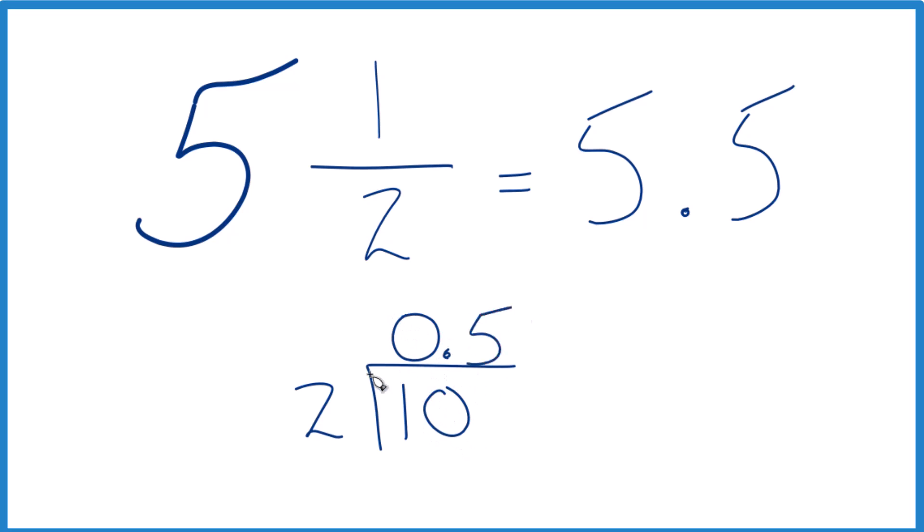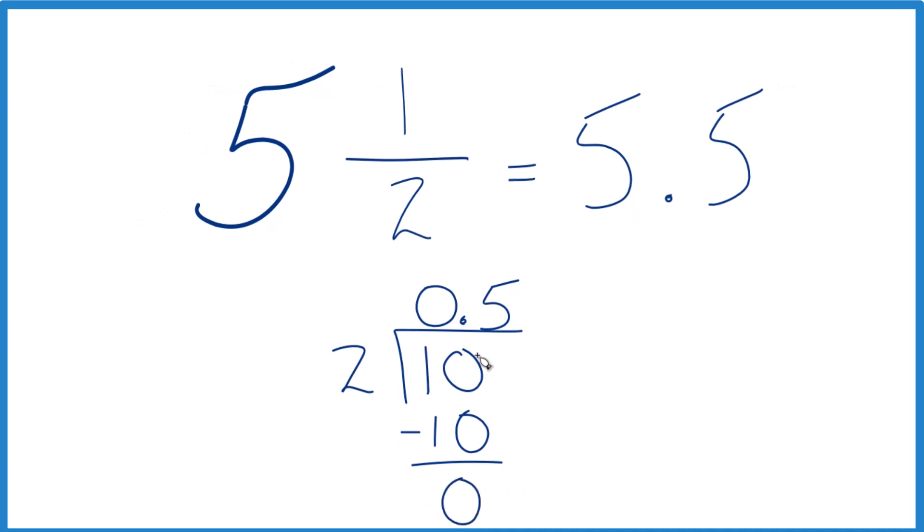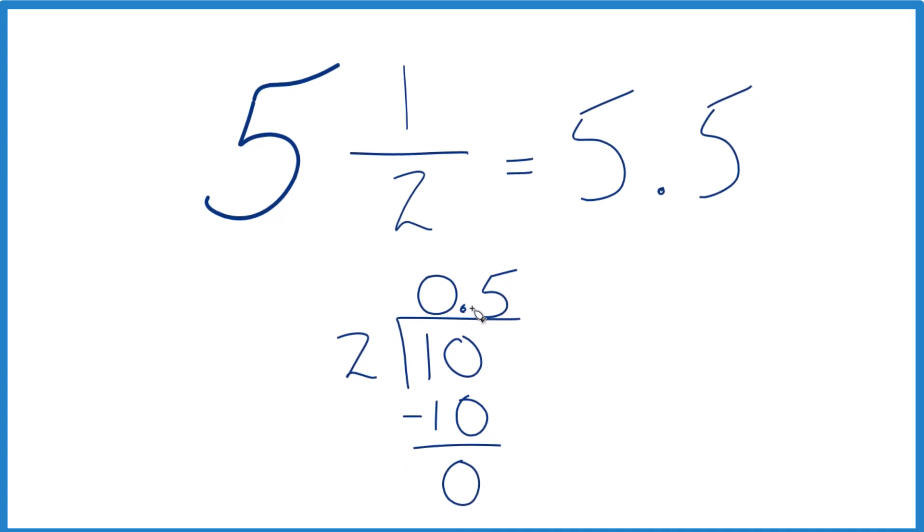So now, five times two, that gives us ten. We subtract, no remainder. So we have five, and then our zero point five. So we have five plus zero point five, five point five.